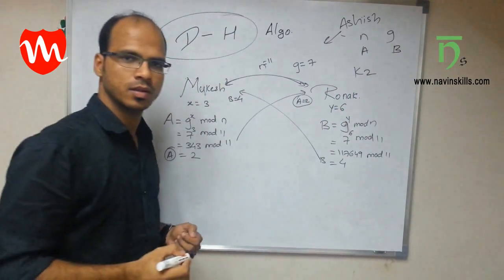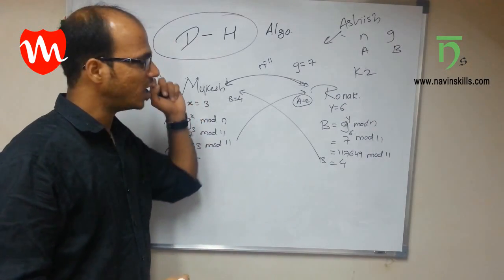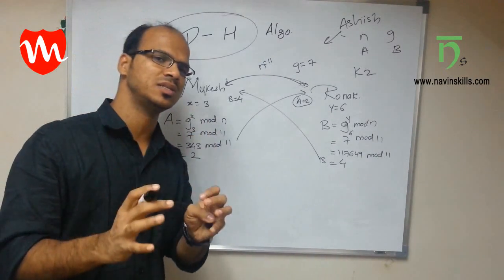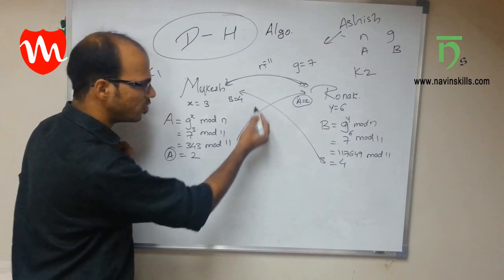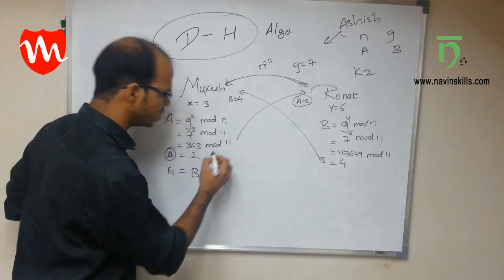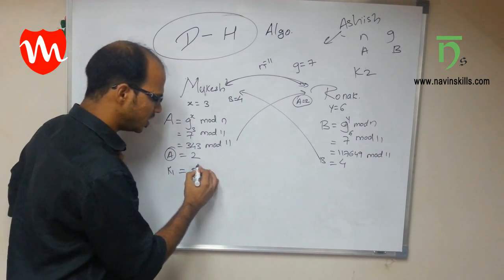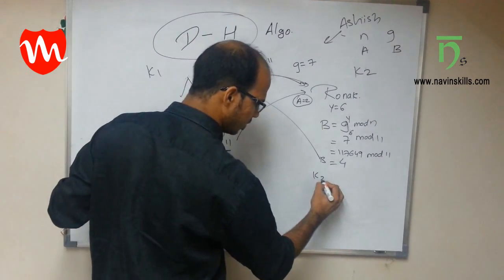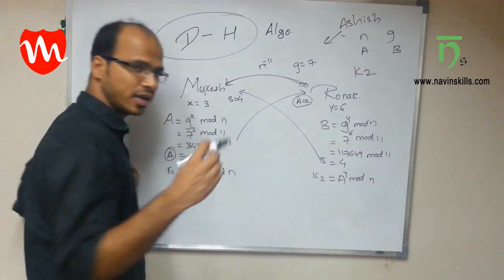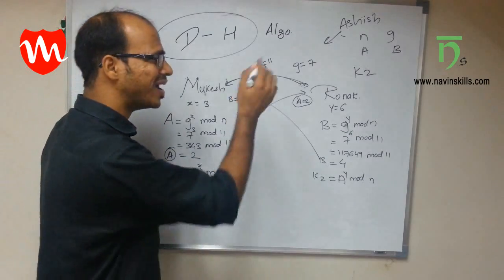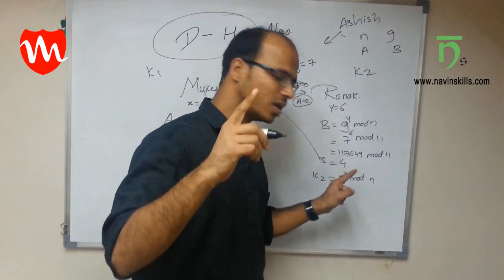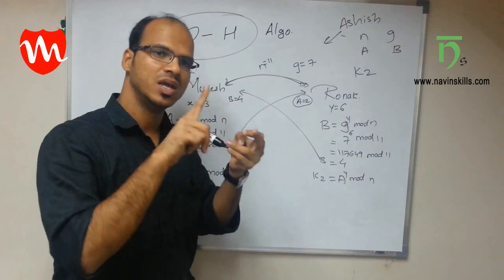Ashish doesn't know x and Ronak doesn't know x; Mukesh doesn't know y. The secrecy lies in x and y being private. Mukesh now calculates K1 = b^x mod n, and Ronak calculates K2 = a^y mod n. Ashish cannot calculate K1 because he doesn't know x, and he cannot calculate K2 because he doesn't know y. Ashish only knows a, b, n, and g.